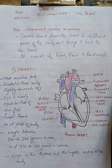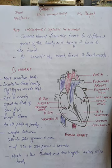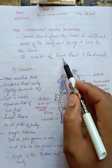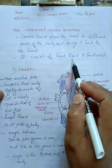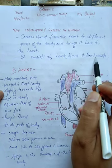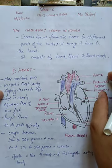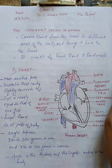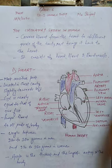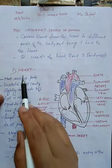The circulatory system in humans consists of three components: the heart, blood, and blood vessels. We are going to discuss all three one by one. First, we are going to discuss the heart.